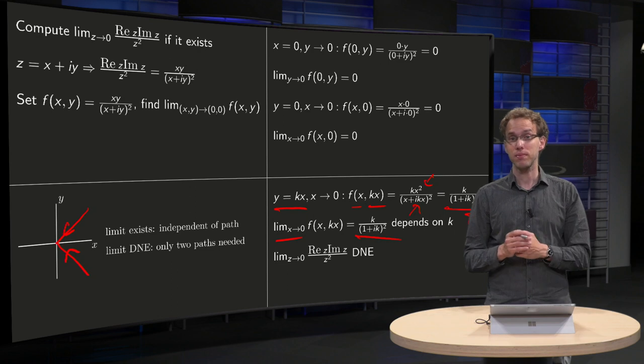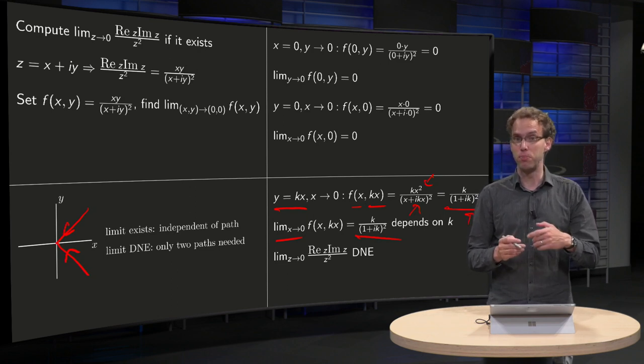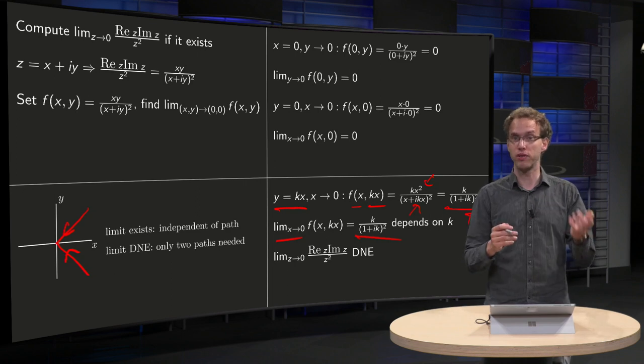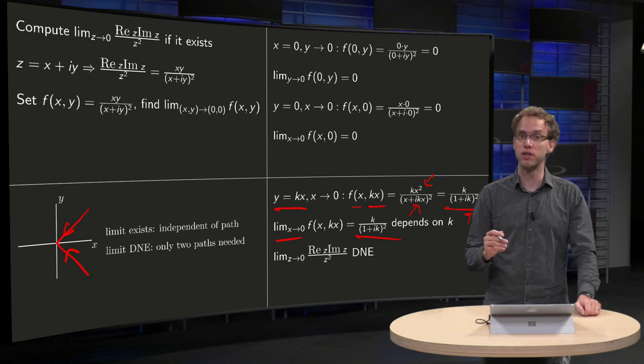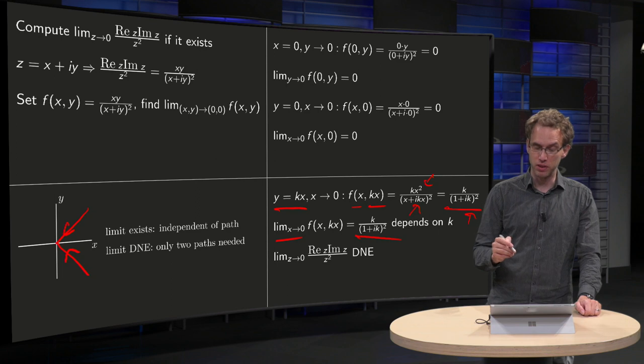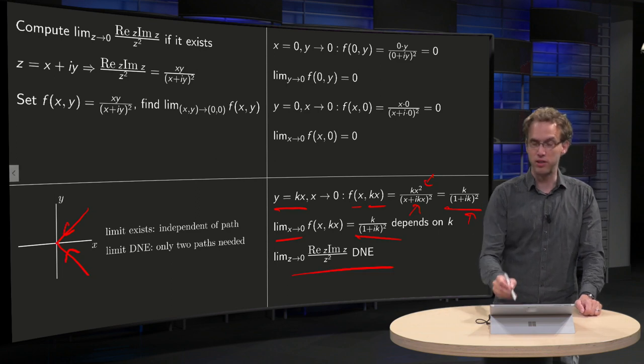And now we see that this value depends on what k we plug in. And if you put in k equals 1 or 2 or 3, you get all different values. So you see your limit depends on k, which means that the limit does not exist.